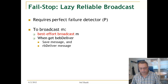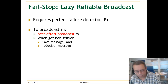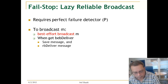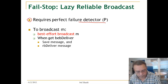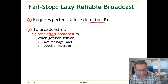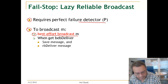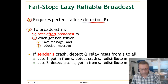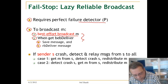Here is an overview of the algorithm. It requires a perfect failure detector. To broadcast a message M, you use the best-effort broadcast to broadcast the message M. Whenever a process gets a best-effort delivery, it saves the message and delivers it to the higher level. This is the normal situation.